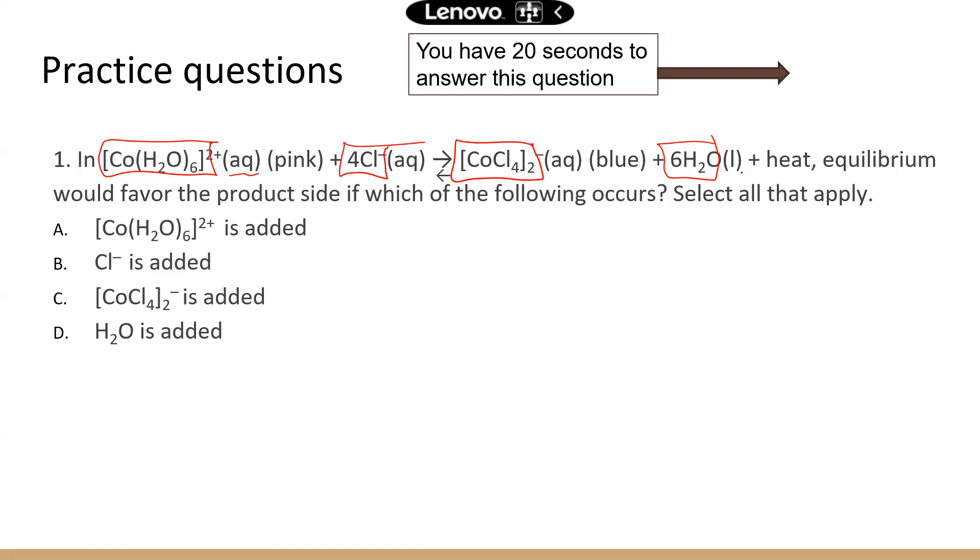Now sometimes the solution may have a color, and the color indicates how the chemical reaction goes. So the reactant color is pink, and the product color is blue.